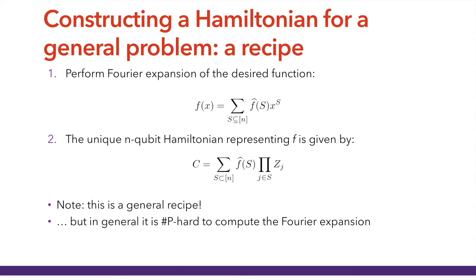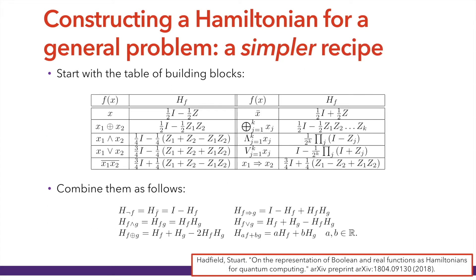This means we can write our Hamiltonian as a sum over subsets of indices of the Fourier coefficient times the product of Pauli Z's over the corresponding subset. This gives us a general recipe: first perform the Fourier expansion of the desired function, then plug those coefficients into this formula — each coefficient multiplied by the corresponding product of Pauli Z's. For a general Boolean function, computing the Fourier expansion is #P-hard. However, if we have a Boolean function composed of simpler building blocks, we can use a table of how to map simple Boolean building blocks and combine them using composition rules.